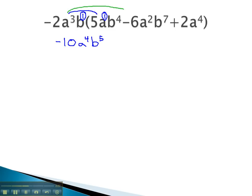Distributing onto the second term, negative 2 times negative 6 is positive 12. Adding the exponents on a, 3 plus 2 is 5. And for b, 1 plus 7 is 8.